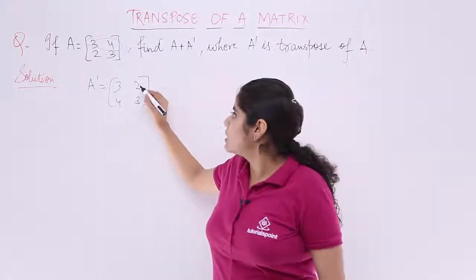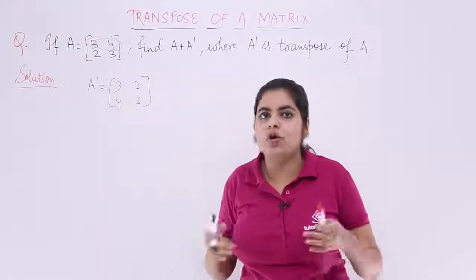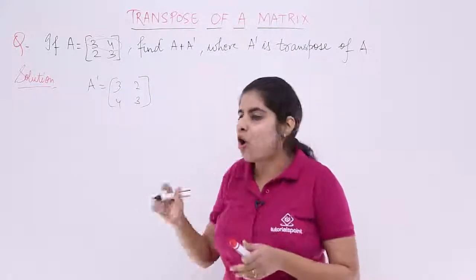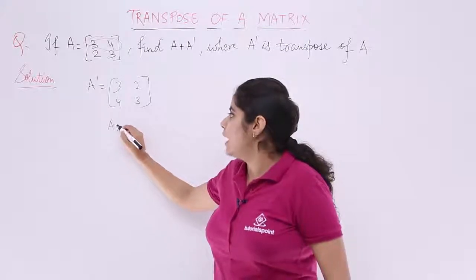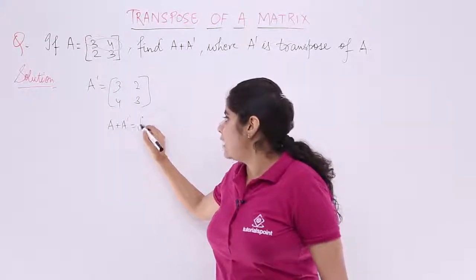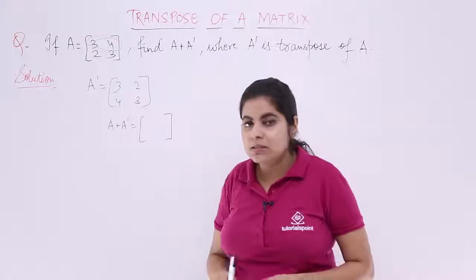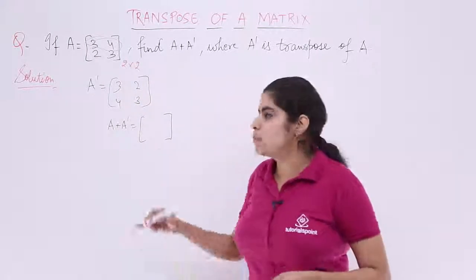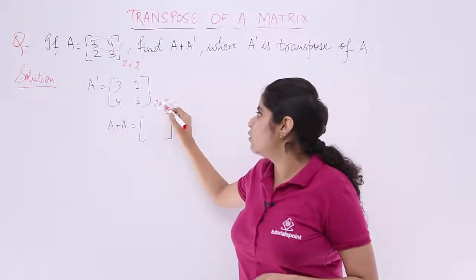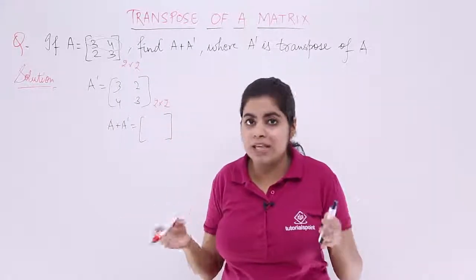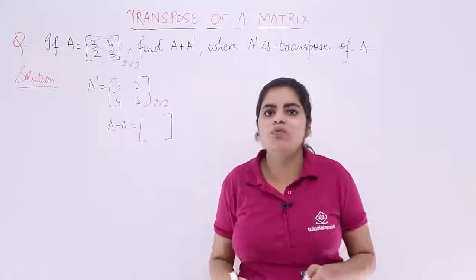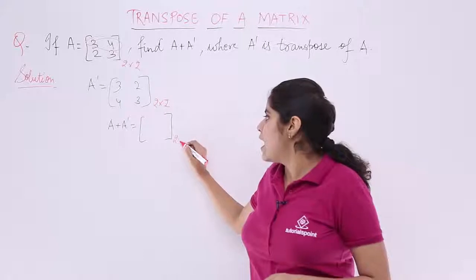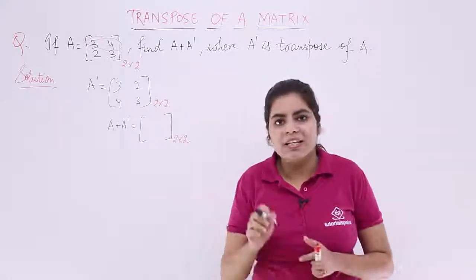Now, when all things are done such as the placement of the rows and columns, what is left? You just have to find the value of A plus A', and that will be again a matrix. The matrix which was given to you was of 2 by 2 order. The transposed matrix also had a 2 by 2 order, and mind it, because they have the same orders, only then we can perform addition operation.